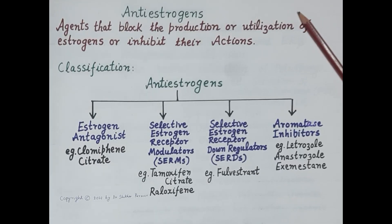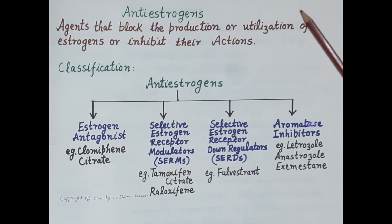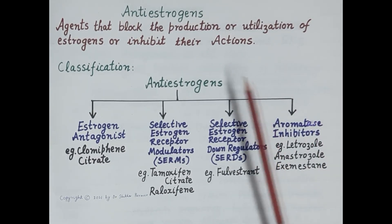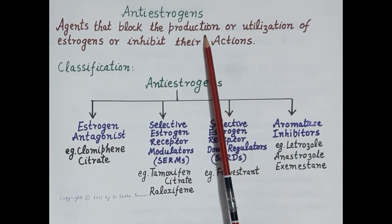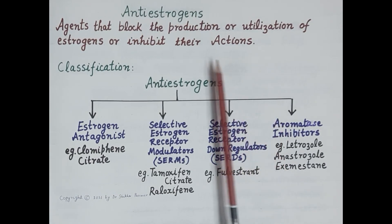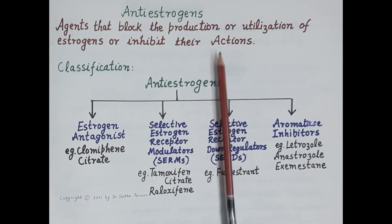Hello students. As we all know, estrogen is a steroidal sex hormone essential for the development and maintenance of female reproductive system and secondary sexual characteristics in women. In today's video we will study pharmacology of anti-estrogens. Anti-estrogens are the agents that block production of estrogen, prevent utilization of estrogen, or inhibit pharmacological actions of estrogens.